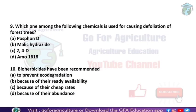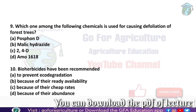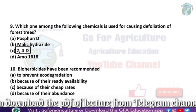Next: which of the following chemicals is used for causing defoliation in forest trees? The answer is 2,4-D. 2,4-D is basically used for causing defoliation in forest trees. When we use 2,4-D, it causes defoliation — meaning the leaves will fall down. This is called defoliation. So the answer is 2,4-D.